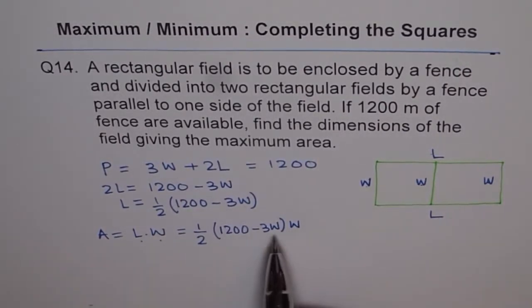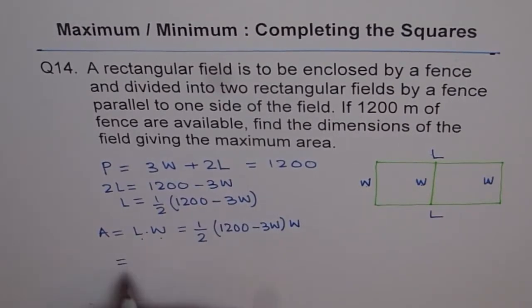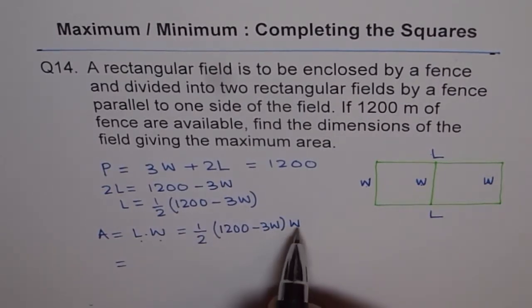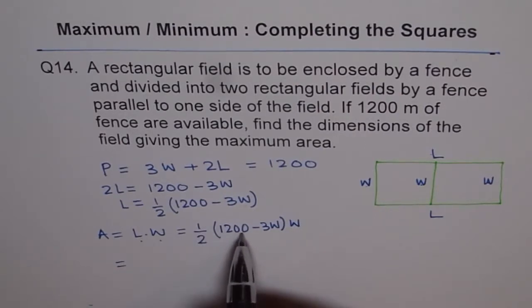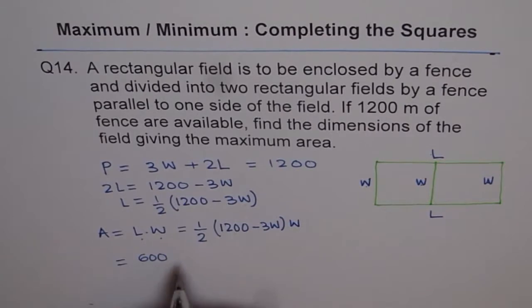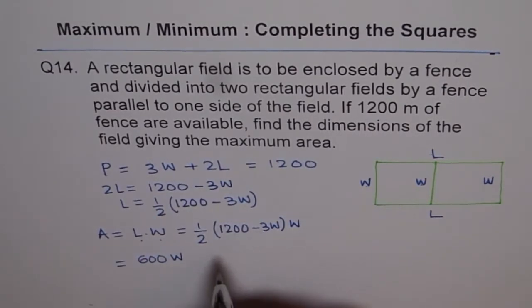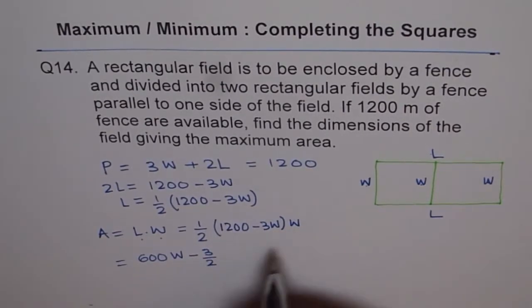Now from here, we can expand this. So we'll multiply every term here with half W, right? So if you do half of 1200, you get 600, right? So let's 600W and then half of 3 is 3 over 2 with minus sign minus 3 over 2. W times W becomes W square.